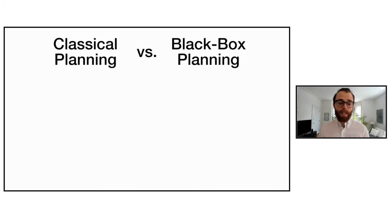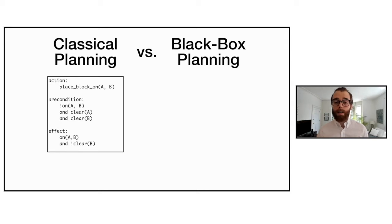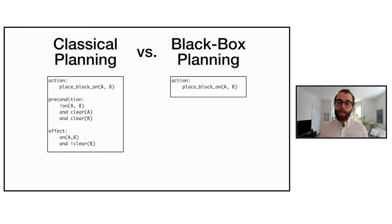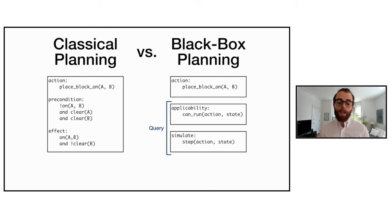In classical planning we have an explicit action model — for example, in a blocks world problem, an action might allow us to place block A on block B. The explicit action model tells us the precondition and the effect of that action, giving us structure we can exploit. Black box planning, on the other hand, does not have that structure. All we get is the name of the action, and we have a simulator we can query to determine whether an action is applicable in a given state and what its effect is.